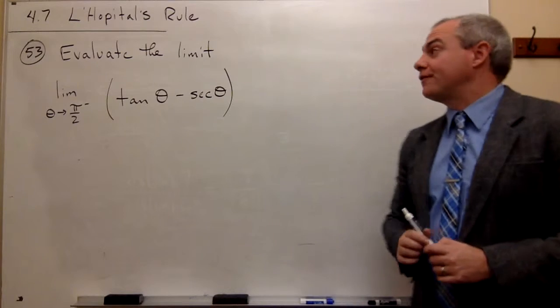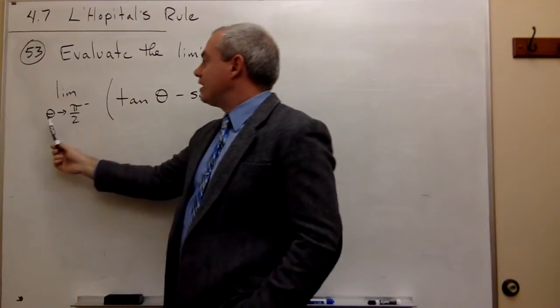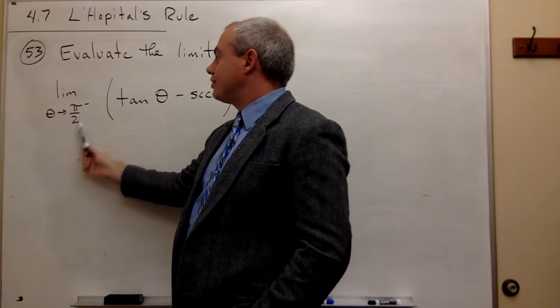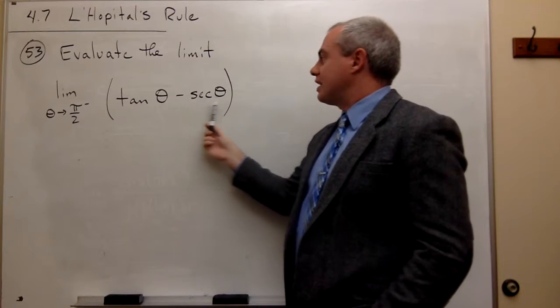Now let's take a look at problem number 53. We'd like to evaluate the limit as theta goes to pi over 2 from the left of tangent of theta minus secant of theta.